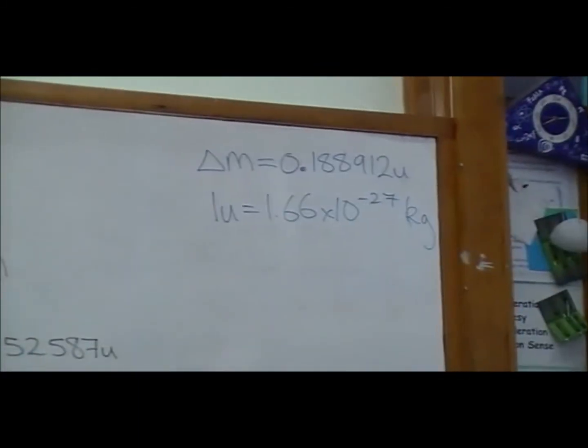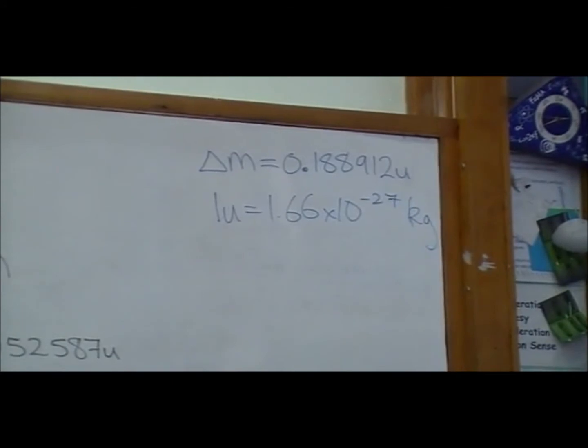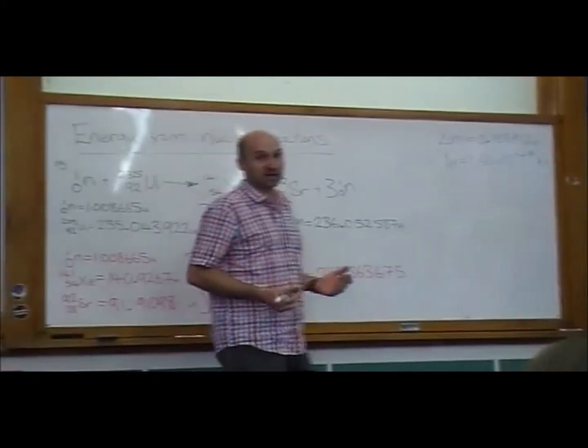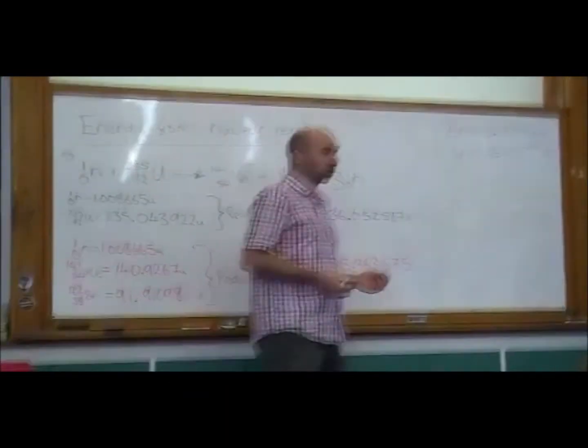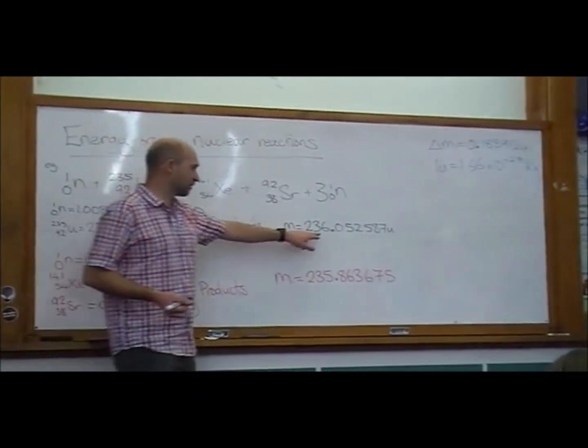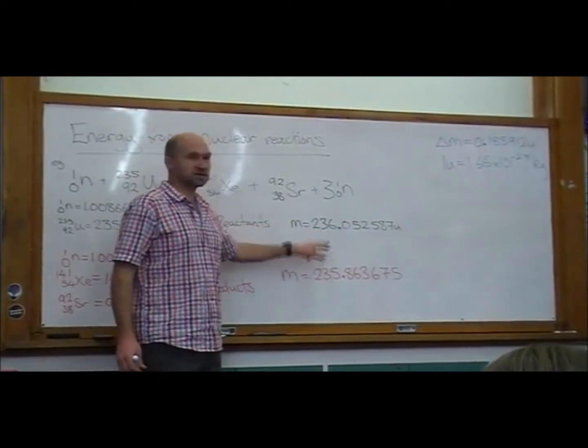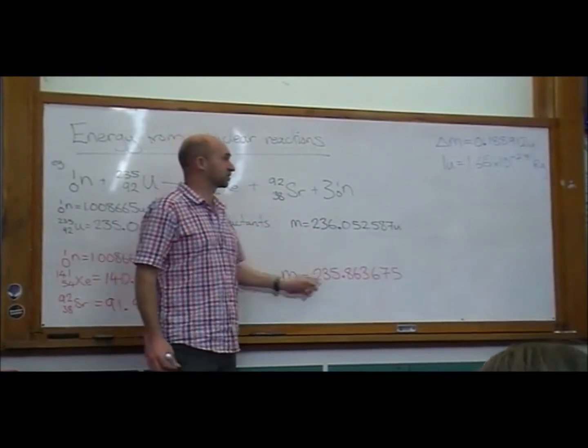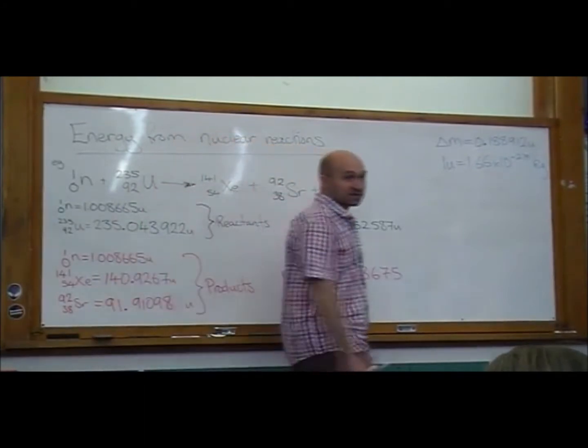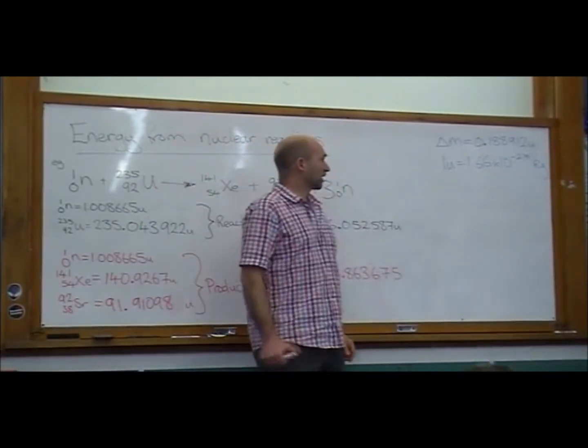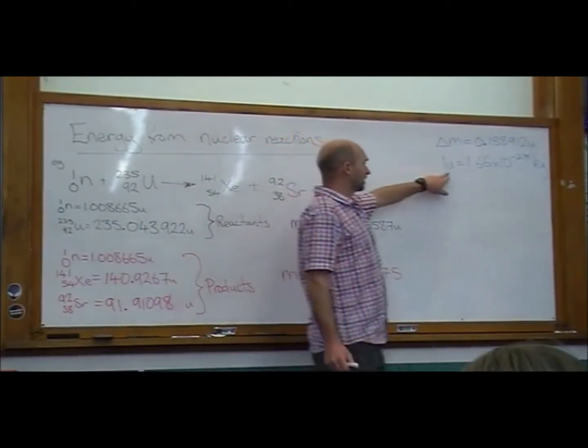And it's nice to use the U when we're doing these reactions because one U is about the same as one nucleon, and so we know that we've got about right, and we've got about 236 on both sides of the equation. We can tell our answer is right, but to do any math with it about energy, we're going to have to convert that into kilograms.